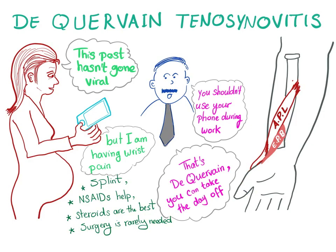This disease is treated with rest. Splints and NSAIDs can help. Steroids are the best option and are sometimes injected into the tendon sheath. Surgery is rarely needed.